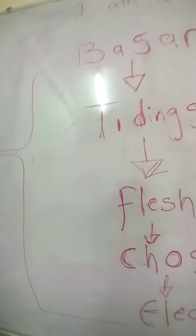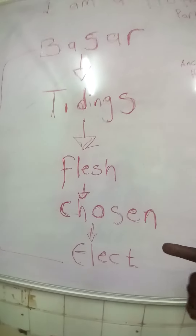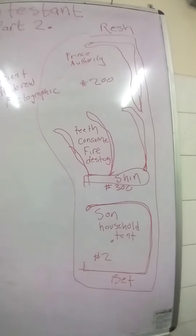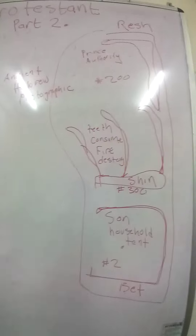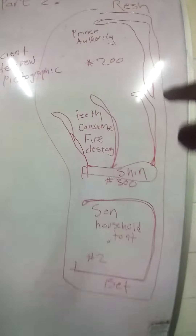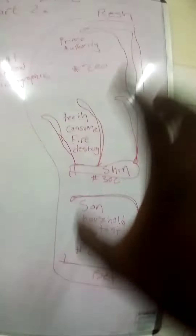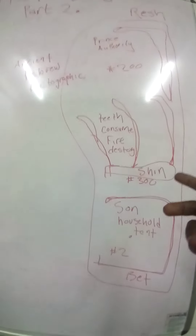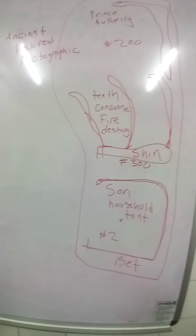How is the word Berser translated into tidings, flesh, chosen, elect? Then we'll do a little bit of ancient Hebrew. In the ancient Hebrew, we have three characters to look at: the resh on top, then the shin, and the bet down here. This is what makes up the word Berser, translated as 'tidings' in English. It's also the word for flesh, chosen, and elect.